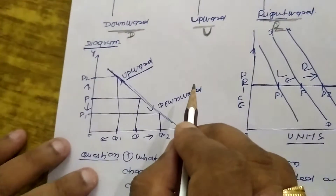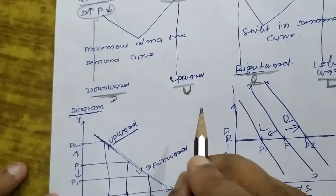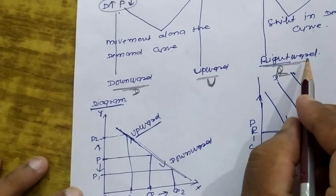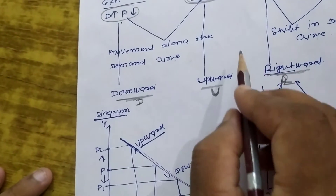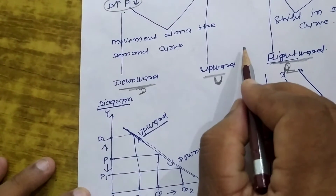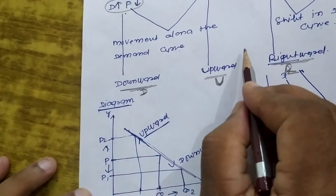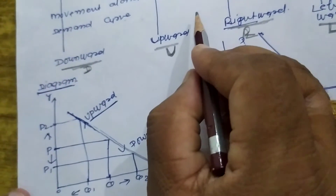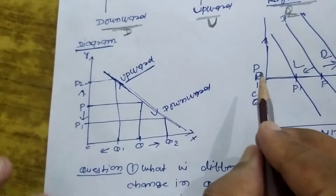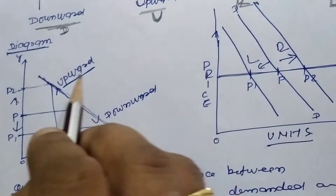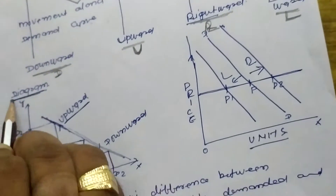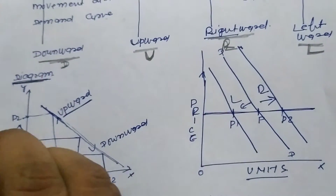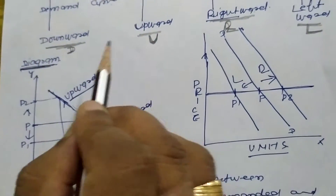Now dear students, based on this we have a total of six differences, which I will discuss one by one. But before moving ahead, I should show you how to prepare the diagram for expansion and contraction — that means, downward or upward movement.